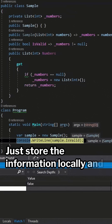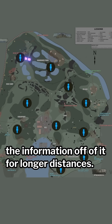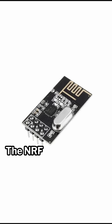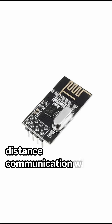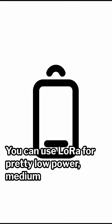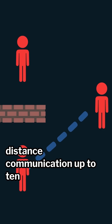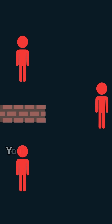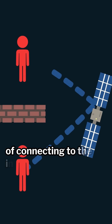Just store the information locally and download it off of it. For longer distances, you may want to look into wireless communications — like NRF, which is a type of short-distance communication within a kilometer. You can use LoRa for pretty low-power, medium-distance communication up to 10 kilometers. And for much longer distances, like across the globe, you're going to want to look into ways of connecting to the internet.